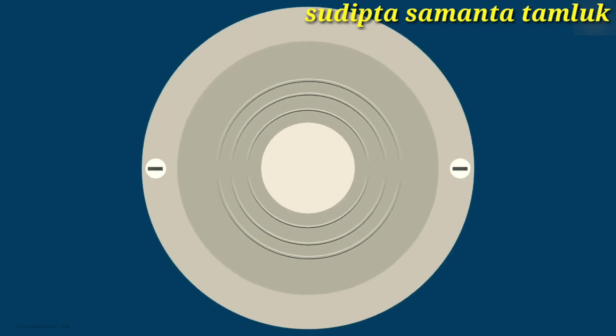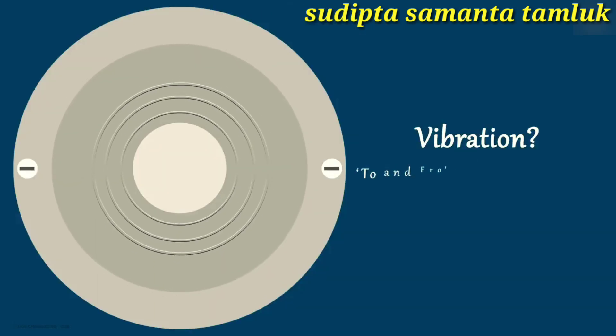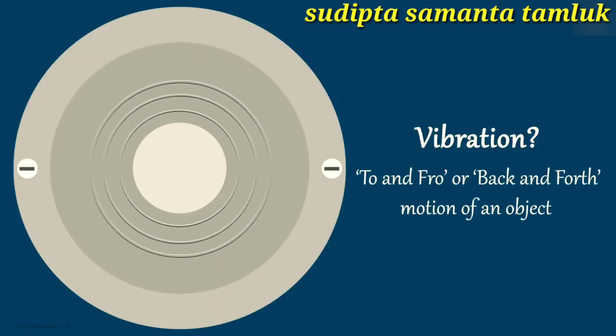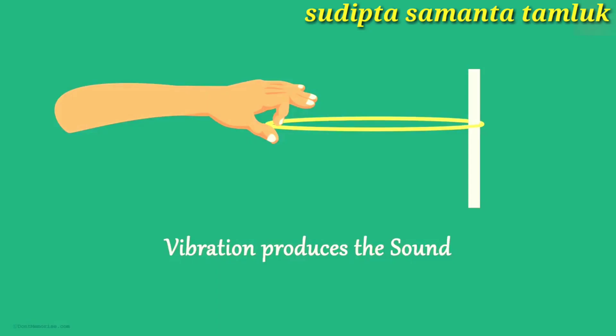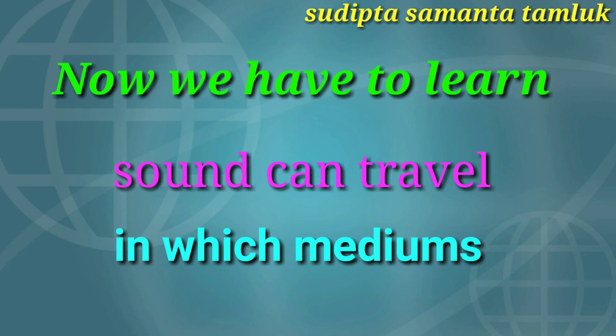First, we need to understand vibration. It is the to and fro, or back and forth, motion of an object. Anything that vibrates will produce sound. We also have to learn in which mediums sound can travel.